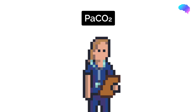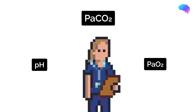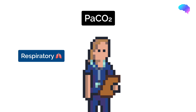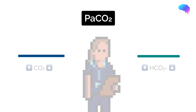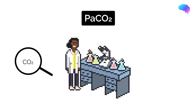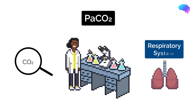At this point, prior to assessing the CO2, you already know the pH and the PaO2. For example, you may know your patient's pH is abnormal, but you don't yet know the underlying cause. It could be caused by the respiratory system with an abnormal level of CO2, or it could be metabolically driven with an abnormal level of HCO3. Looking at the level of CO2 quickly helps rule in or out the respiratory system as the cause for the derangement in pH.